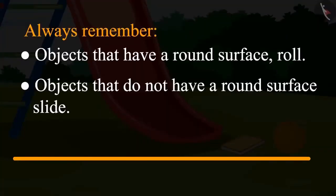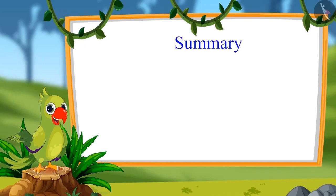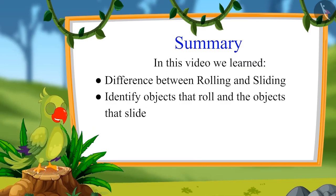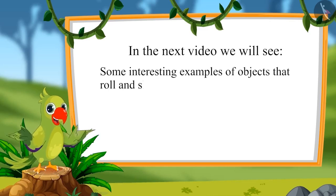Mother summarizes: objects whose surface is round will roll, and objects whose surface is not round will slide. That was all for today's video. In the next video, we will see some interesting examples of objects that roll and slide. Bye bye children!